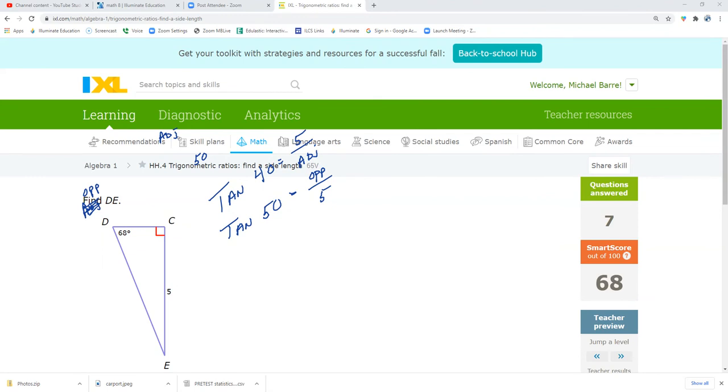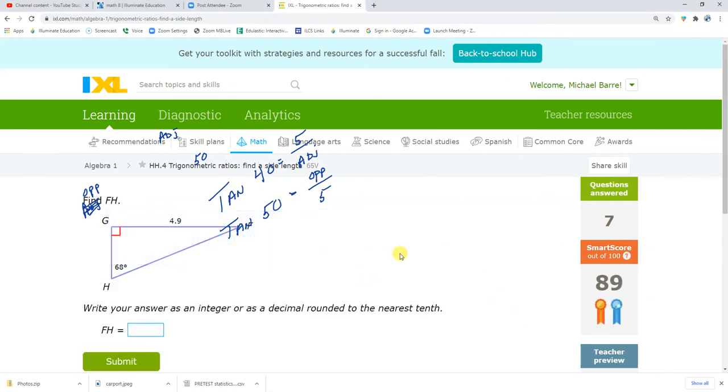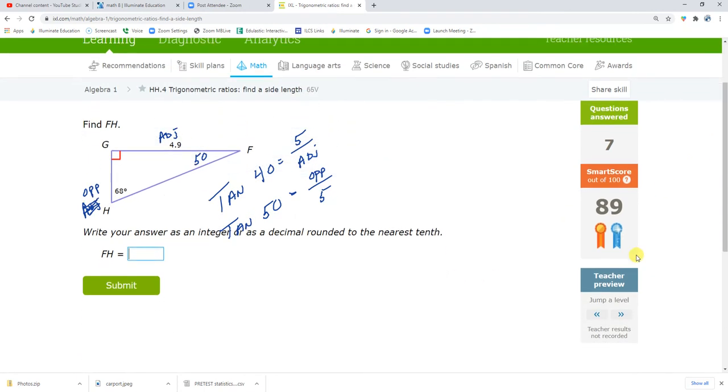Jumping a level, see if anything crazy happens if we jump a level. It goes decimal on me, big deal. Round it to the nearest tenth. Jumping a level again.